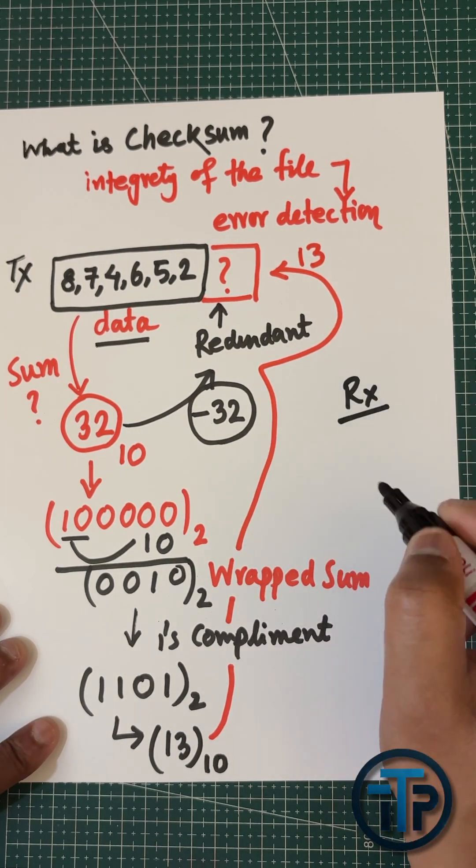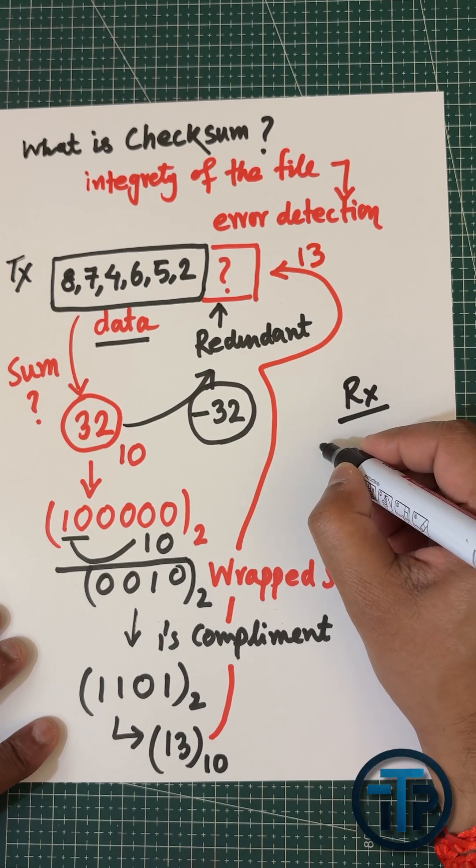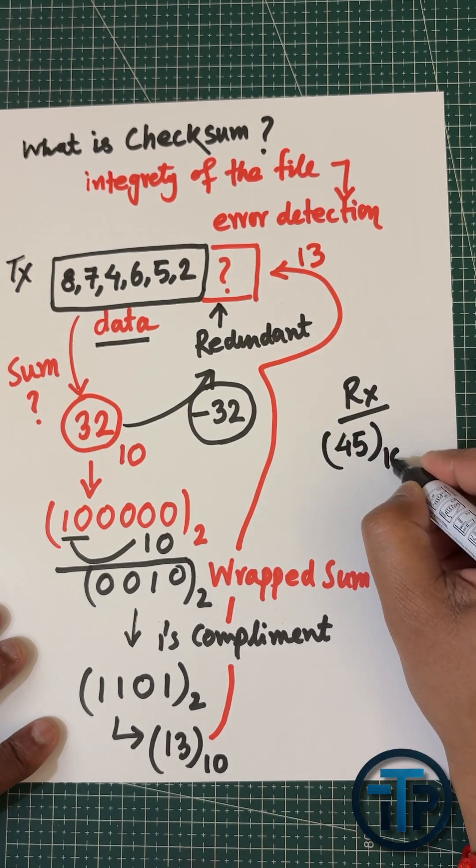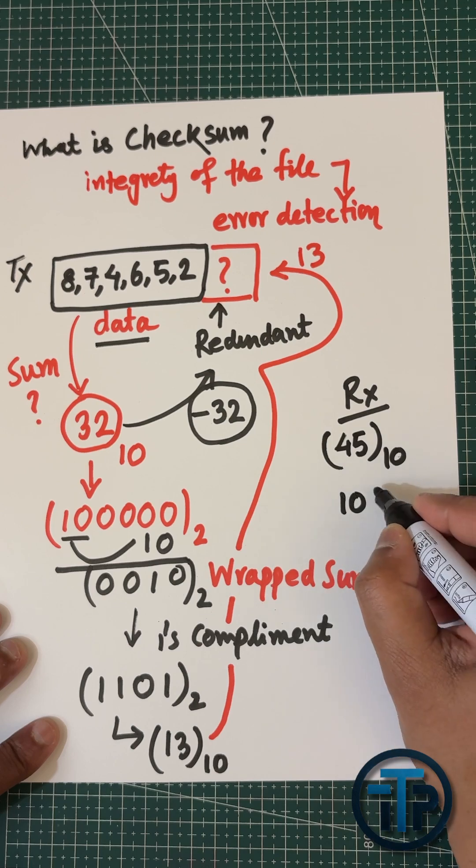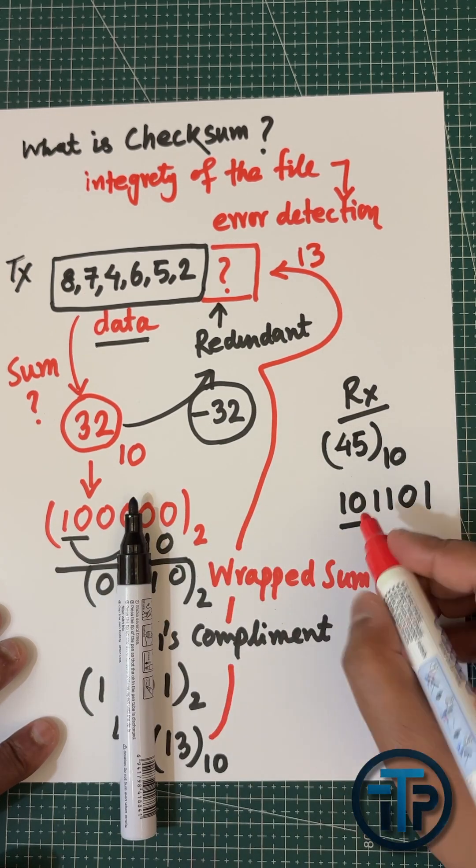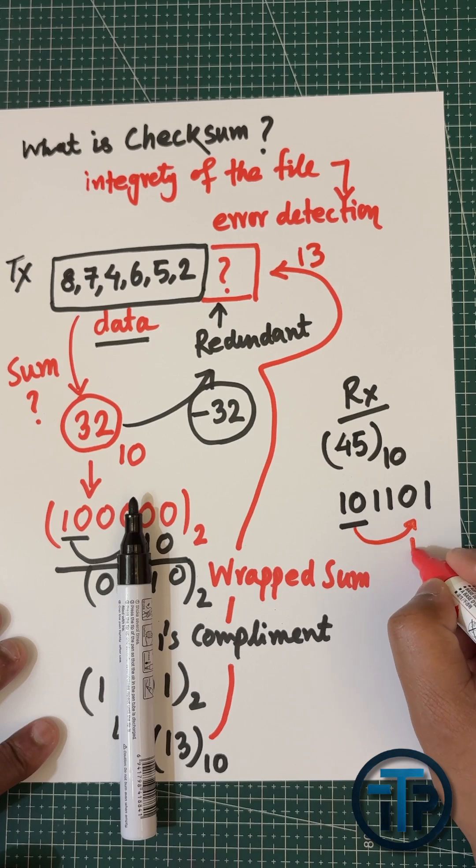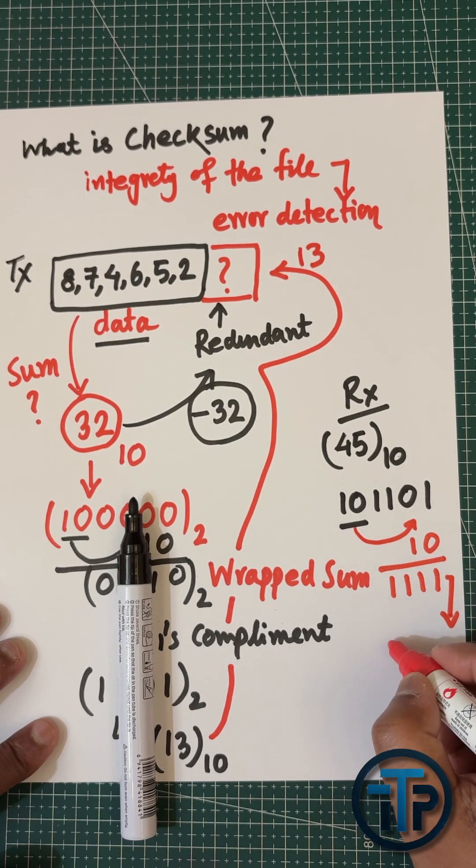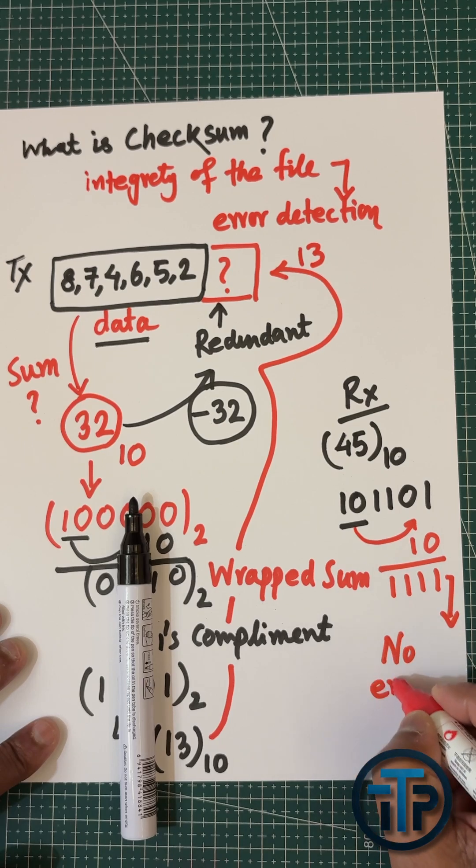In the receiver side, we have to get zero or you could say one. In the receiver side, the summation of the entire received data will be 45 in the decimal format. In the binary format it will be 101101. Then you have to do the wrapping process because it's a four-bit checksum.